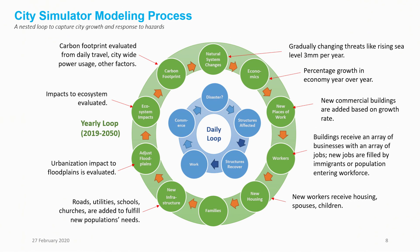The outer urbanization loop: we start with natural system changes — if we're in a coastal community and sea level is rising, we raise the sea level each year by three or five millimeters, whatever the projection is. We then determine the economic projection for the city for the year and convert that into new commercial buildings placed across the city. We fill those up with avatars, with workers, and those people need new housing, so we also place housing across the city. The avatars are going to have families, so we increase the population to accommodate them. All these new buildings need to be connected and served, so we add new utilities and infrastructure. We measure things like how all this adjusts flood plains in the city, the impact to ecosystem services — imagine taking up some wetland to build a new subdivision — and the change in carbon footprint. That's run once a year.